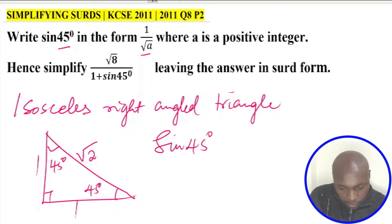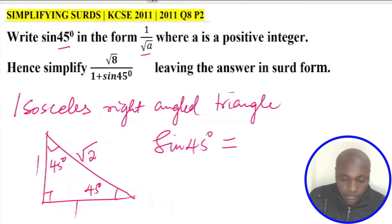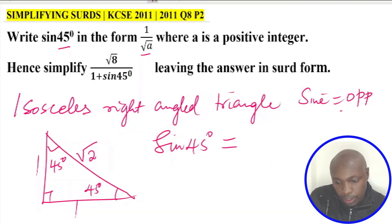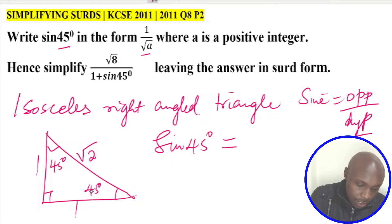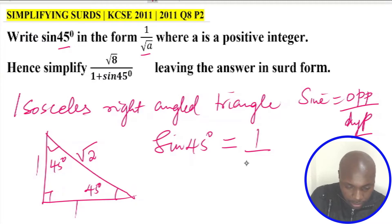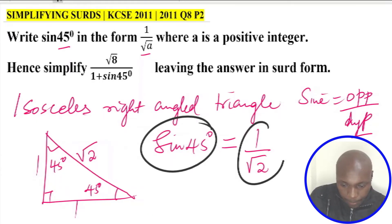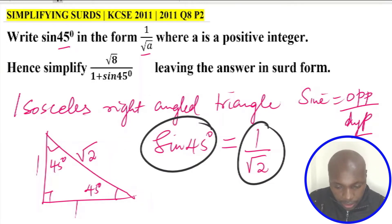Using this triangle to obtain sine of 45, we get the ratio opposite over hypotenuse. Considering the lower 45-degree angle, the opposite side is 1 and the hypotenuse is root of 2. So we have written sine of 45 degrees as 1 divided by root of 2.